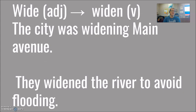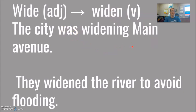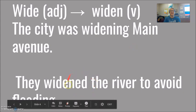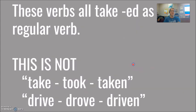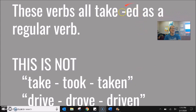Wide is another example. Adding this EN makes the verb widen. Here we can use past continuous: the city was widening Main Avenue. Past tense with ED: they widened the river to avoid flooding.